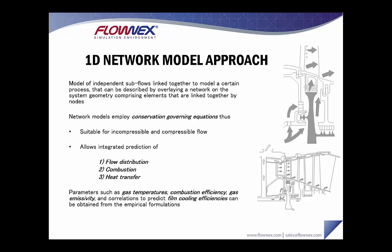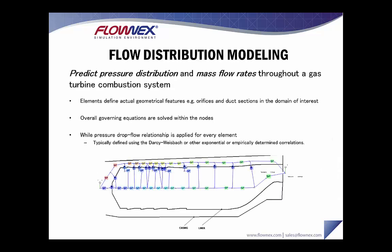Parameters such as gas temperatures, combustion efficiencies, gas emissivities, and correlations to predict film cooling efficiencies can be obtained from empirical formulations and implemented into the network. Flow distribution modeling allows you to predict the distribution and mass flow rates through the gas turbine combustion system. Typically elements define actual geometrical features such as orifices and duct sections in the domain of interest. The overall governing equations are solved within nodes, and a pressure drop flow relationship is applied for every element, typically defined using the Darcy-Weisbach, exponential, or empirically determined pressure loss correlations.